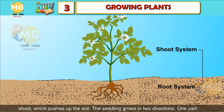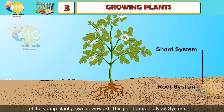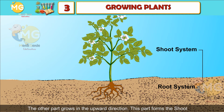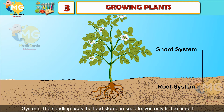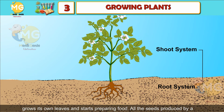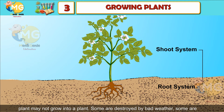Soon, tiny leaves begin to develop inside along with the shoot, which pushes up through the soil. The seedling grows in two directions: one part of the young plant grows downward, forming the root system; the other part grows upward, forming the shoot system. The seedling uses the food stored in seed leaves until it grows its own leaves and starts preparing food.